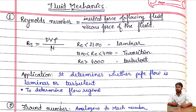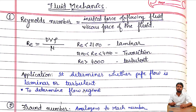The application of Reynolds number is that it determines whether pipe flow is laminar or turbulent. It tells us about the flow pattern — how much turbulence is there, whether the fluid is moving in straight lines or not. We divide flow into laminar, transition, or turbulent by calculating the Reynolds number.